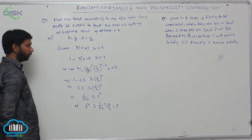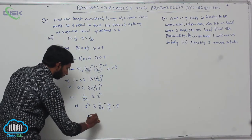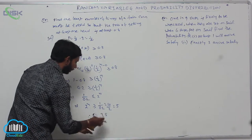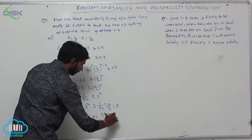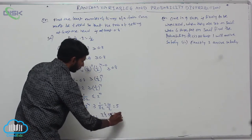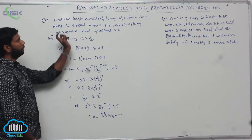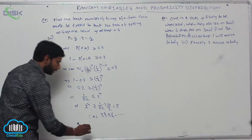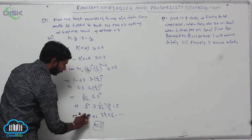If 2^N is greater than or equal to 5, then N must be N equal to 3, 4, 5, 6, and so on. But since we need the least number of times, the least value is N equal to 3.